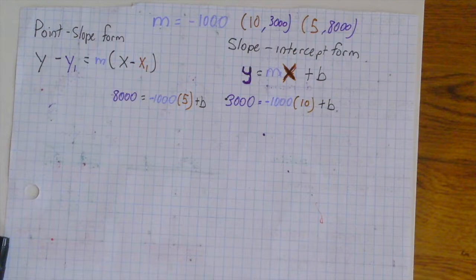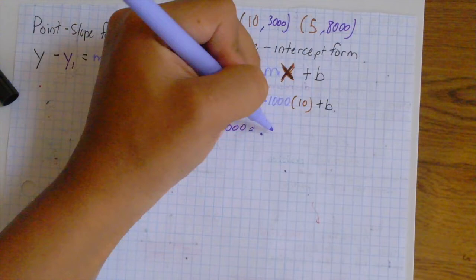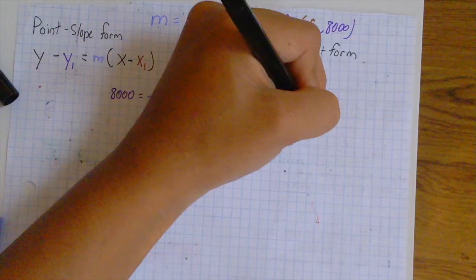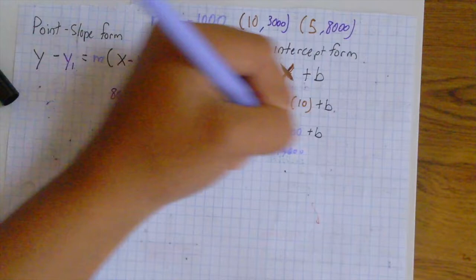We remain our results. That's 3,000 equals negative 1,000 times 10 plus b. We then add, to get to the other side of the equation, we add 10,000 to each side. Therefore, b equals 3,000 plus 10,000, 13,000.